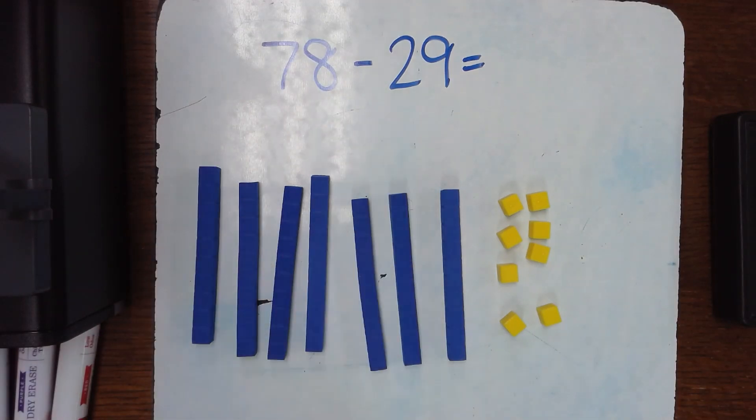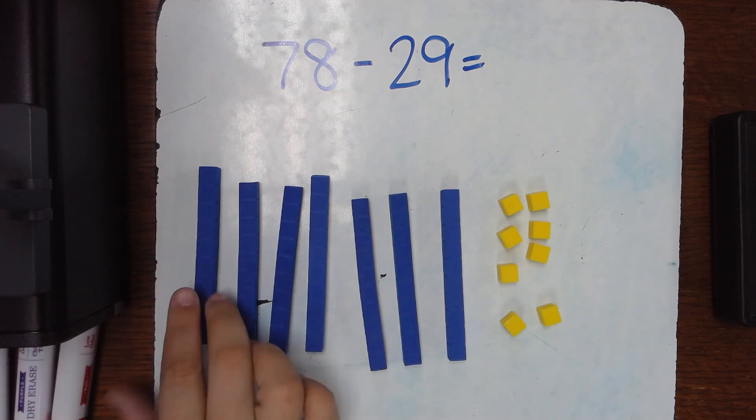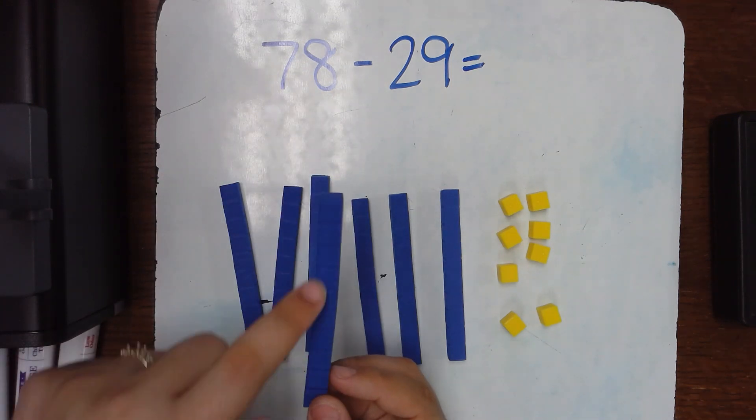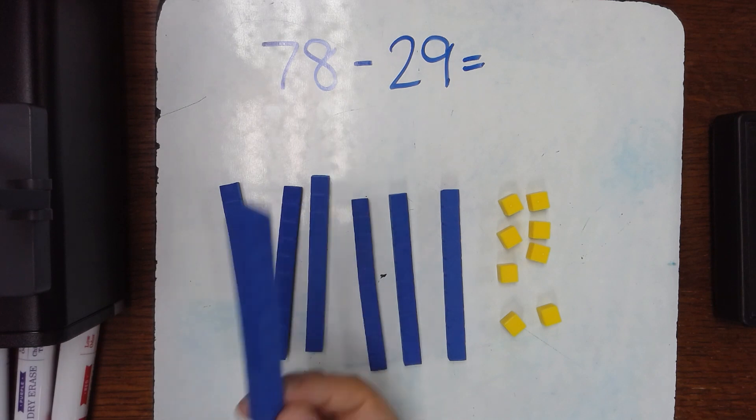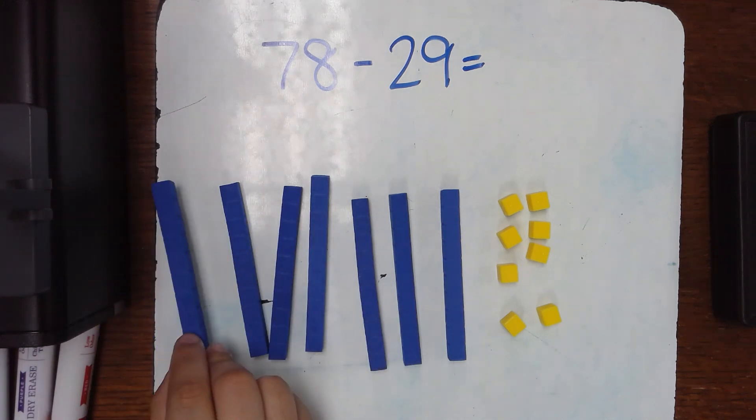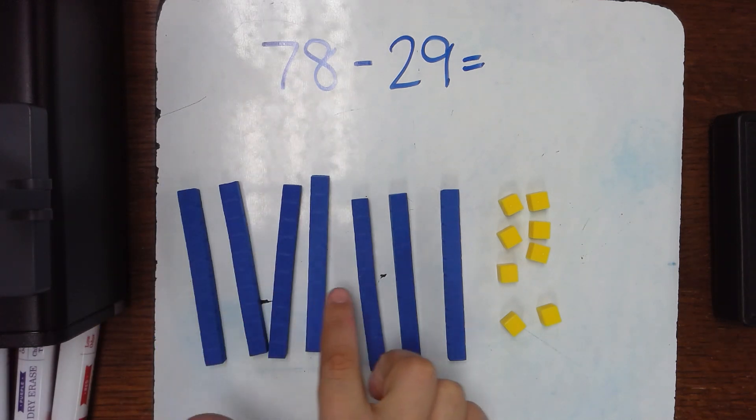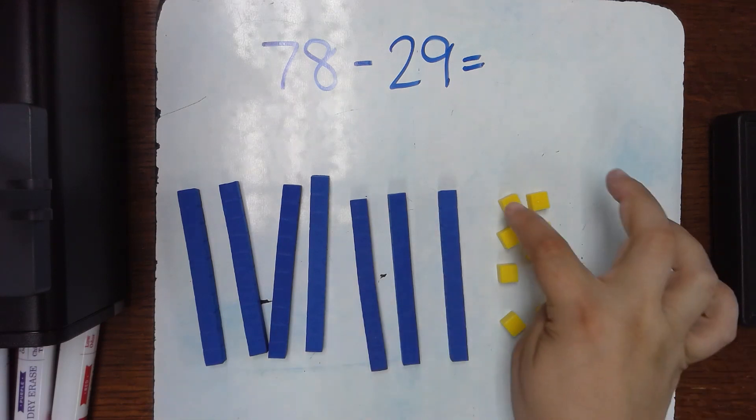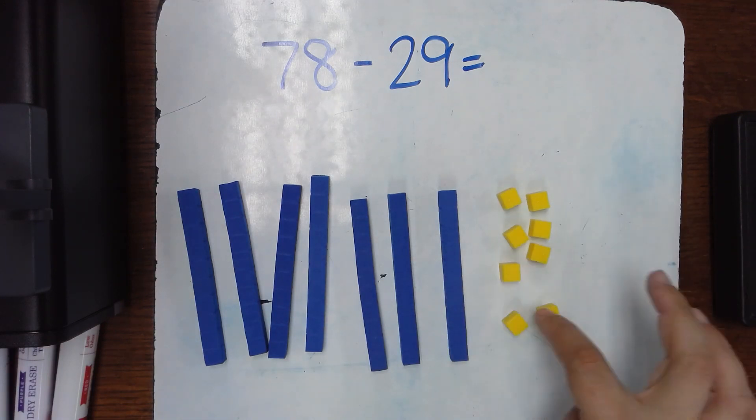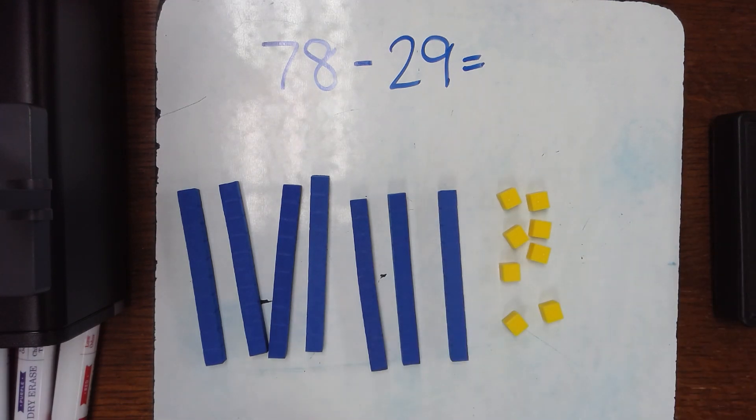So if we have 78 minus 29, we have seven tens and these are ten blocks because there's ten little ones glued together and I have to count these by counting by tens. So 10, 20, 30, 40, 50, 60, 70, and then I have eight ones blocks.